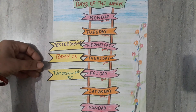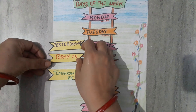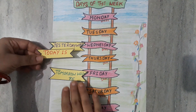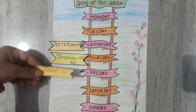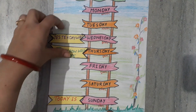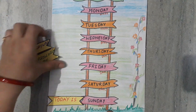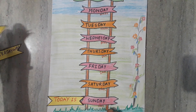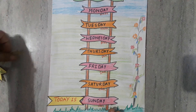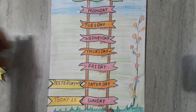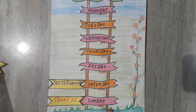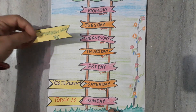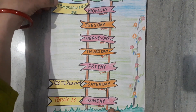Next example: if today is Sunday, then yesterday was Saturday, and tomorrow will be Monday.